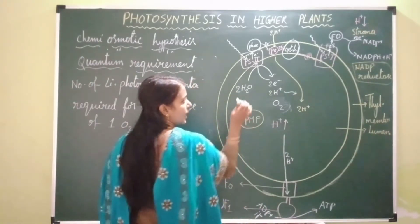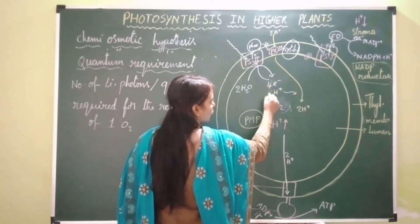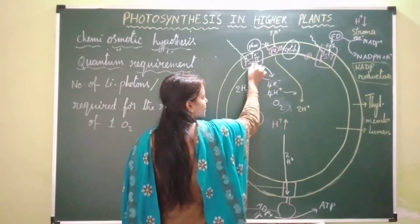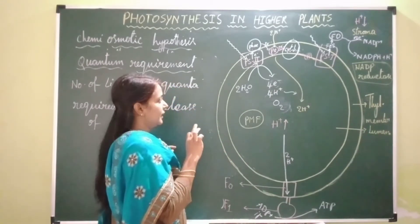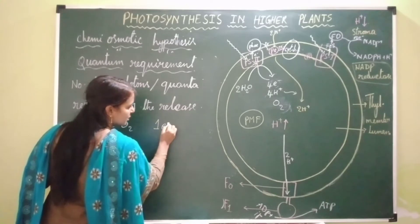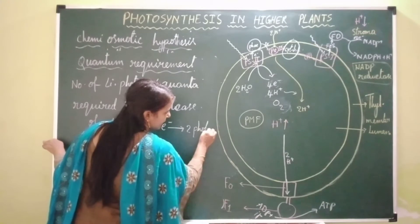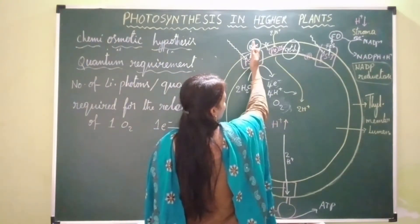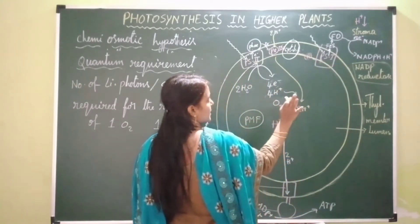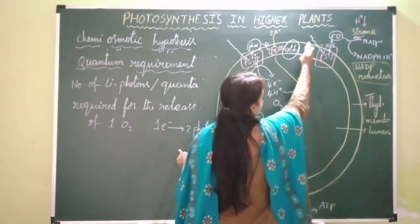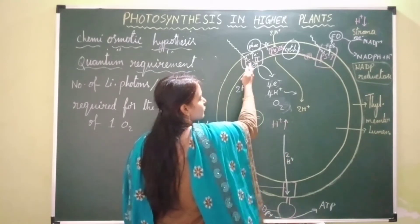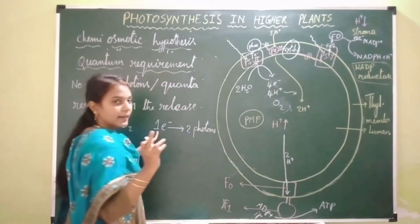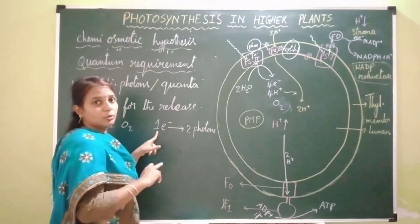So when two water molecules undergo splitting, four electrons, four protons, and one oxygen molecule will be released. These electrons enter into PS2 and from PS2 they will be transported to the electron transport system one by one. For the transfer of one electron, two photons are required — one photon for the activation of photosystem 2 and one photon for the activation of photosystem 1.